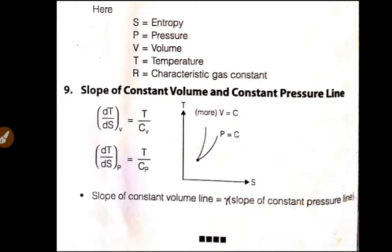So next one is slope of constant volume and constant pressure line. Here is the specific heat ratio. Slope of constant volume divided by slope of constant pressure line, that is gamma. So next one is DT divided by Ds over V is T by Cv, constant volume. Next one is constant pressure, DT divided by Ds over constant T is equal to T by Cp.